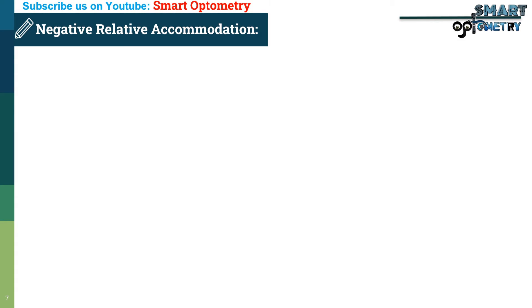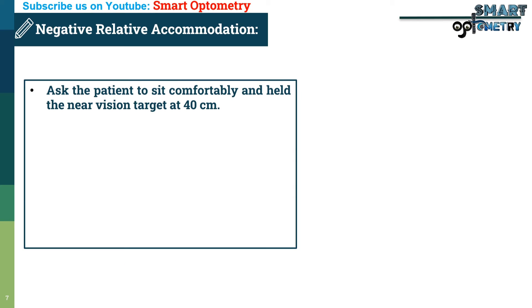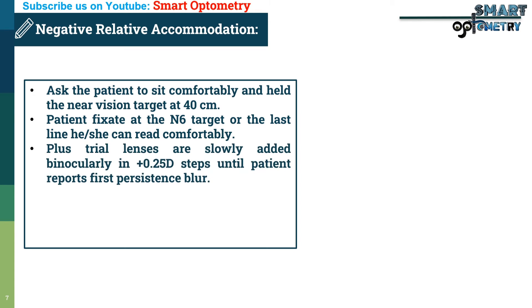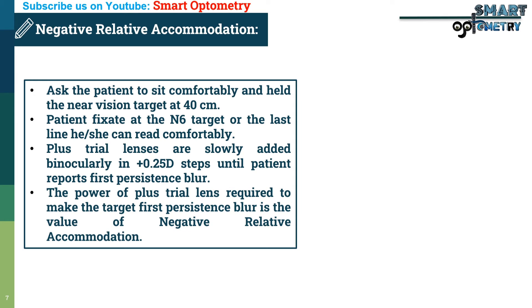Now, how to measure negative relative accommodation. Ask the patient to sit comfortably and hold the near vision target at 40 cm. The patient fixates at the N6 target or the last line they can read comfortably. Then plus lenses are slowly added binocularly in 0.25 dioptre steps until the patient reports first persistent blur. The power of the plus trial lens required to produce first persistent blur is the value of negative relative accommodation.